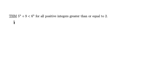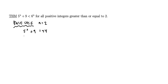As always, I'll start with my base case. Note that in my theorem, the smallest case for which this is true is actually n equal to 2, so let me evaluate the quantity on the left-hand side. In the n equals 2 case, I'll have 5 squared plus 9, which is 34. On the right-hand side, I'll have 6 squared, which is 36. Sure enough, 34 on the left-hand side is less than 36 as required, so my base case checks out.